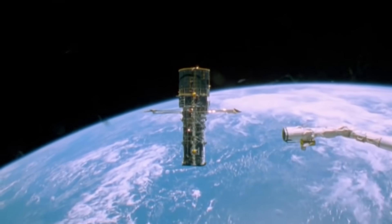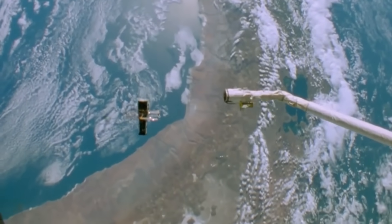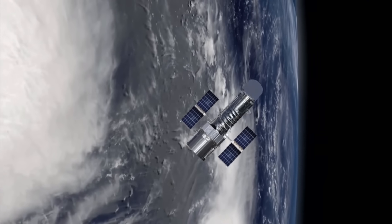Even if Hubble continues to function over the next decade, its orbit is constantly decaying, and in the 2030s, Hubble will crash into the atmosphere and burn up before reaching the ground.